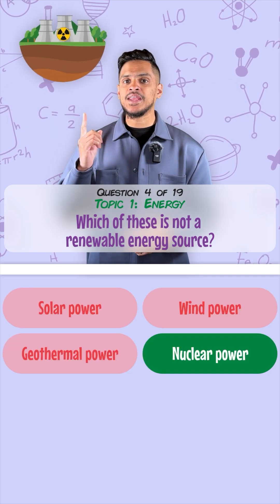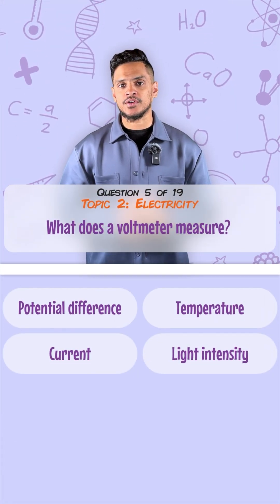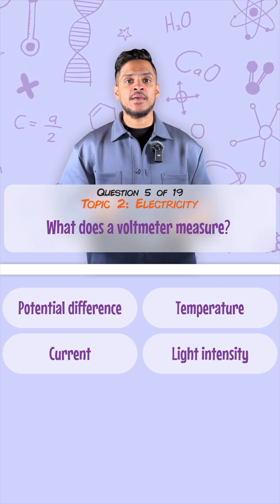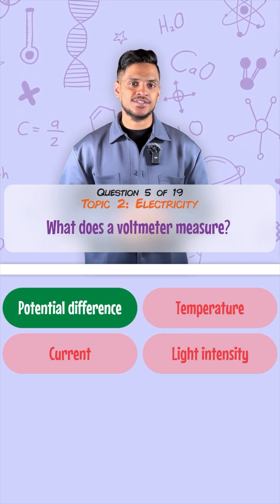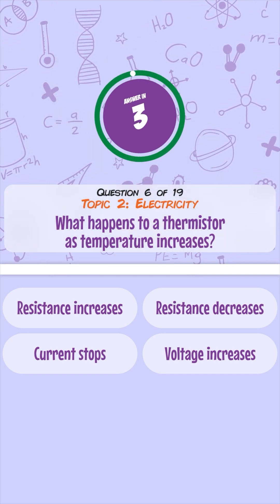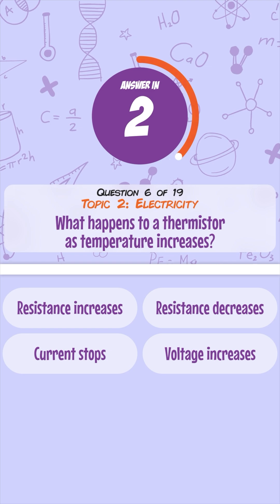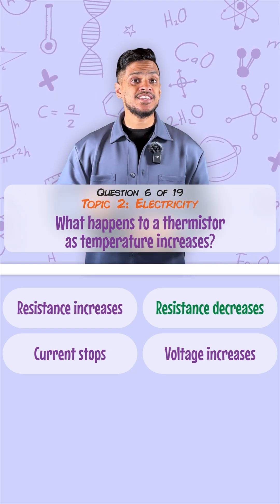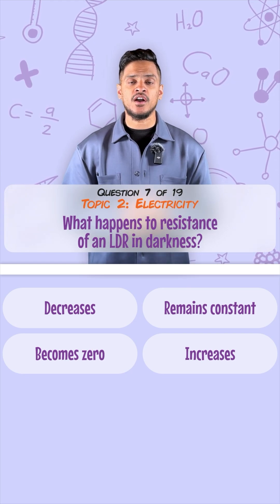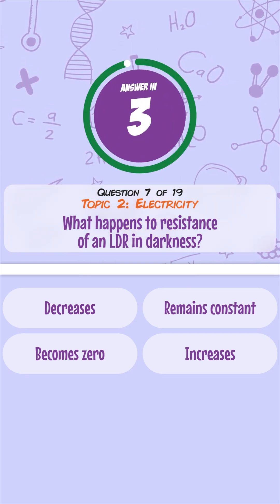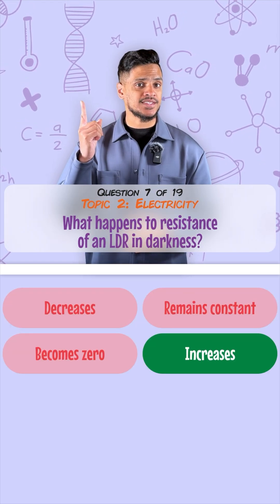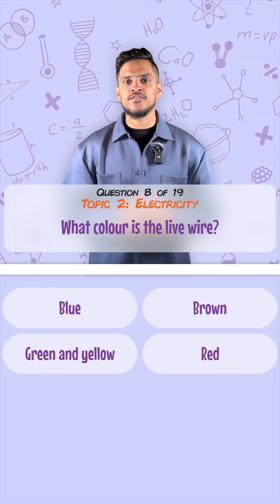Which of these is not a renewable energy source? That's nuclear power. What does a voltmeter need to measure? It measures potential difference. What happens to a thermistor as temperature increases? Its resistance decreases. What happens to the resistance of an LDR when it's dark? Its resistance increases.